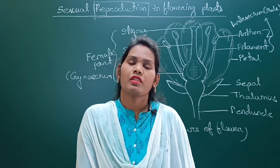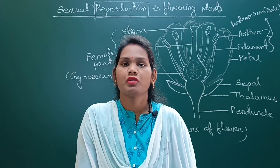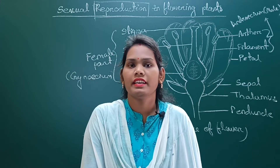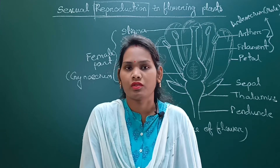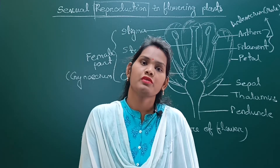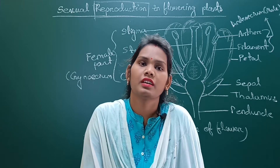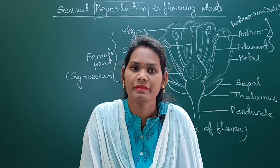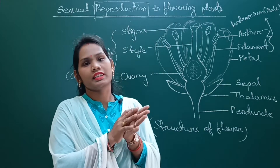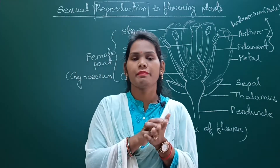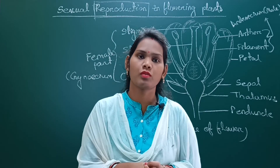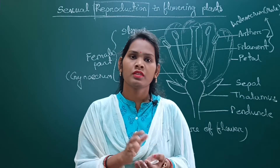The mode of reproduction is of two types. One is sexual mode and another one is asexual mode. Sexual mode involves two types of sexes — both male and female gametes. If the fusion occurs between male and female gametes, then that type of reproduction is called sexual mode of reproduction.